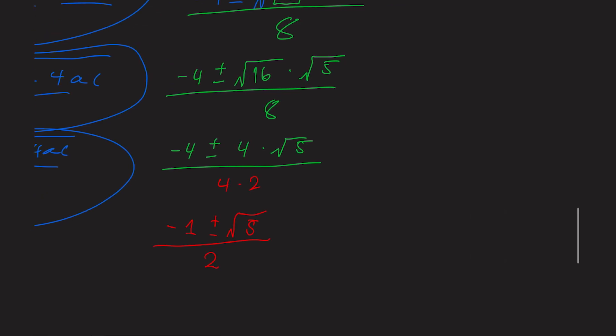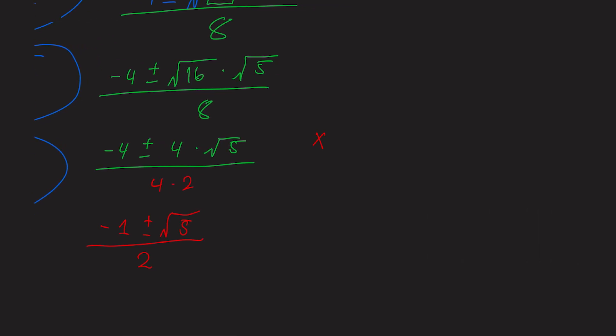So that means that one root exists at x equals negative 1 over 2 plus rad 5 over 2. And the other root exists at x equals negative 1 over 2 minus rad 5 over 2.